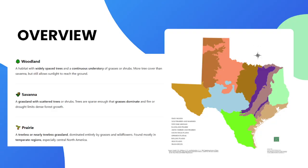As we go from wooded areas in the east of Texas towards west Texas, the vegetation goes from woodlands and heavy piney woods, towards savannas with scattered trees, and then eventually down to prairies. A prairie is a treeless or nearly treeless grassland dominated entirely by grasses and wildflowers, found mostly in temperate regions, especially central North America. As you come towards western Texas, you start to see prairies and eventually get into higher plateau regions and hills.